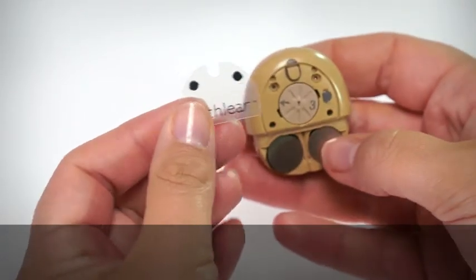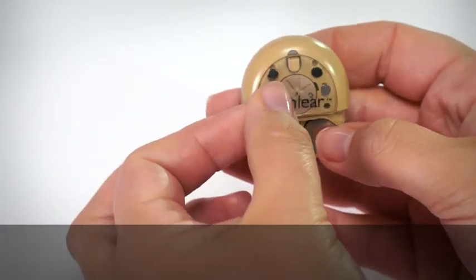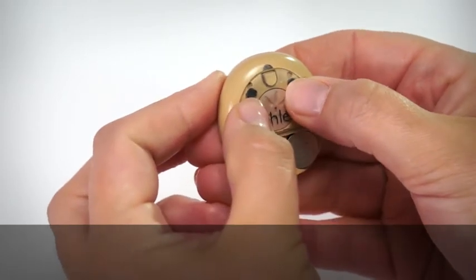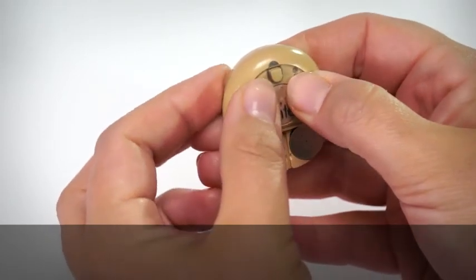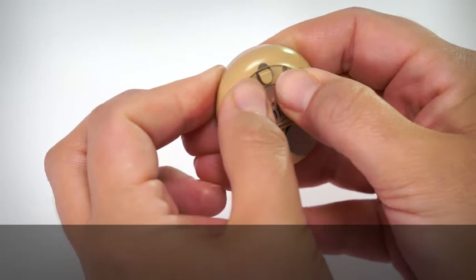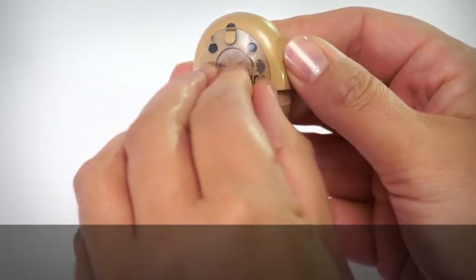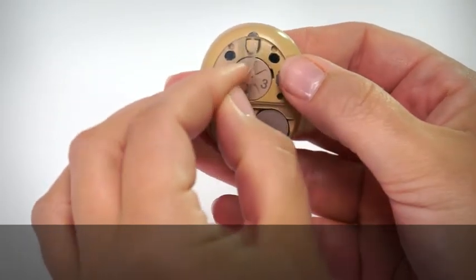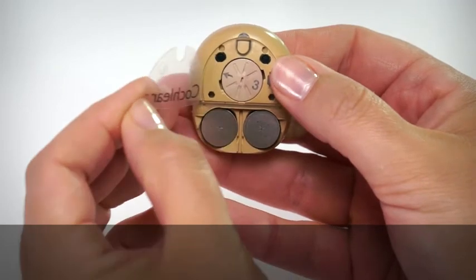lay the applicator over the processor, aligning the protectors over the microphones. Press the microphone protectors down with your finger. Remove the applicator carefully by peeling it upwards from the side.